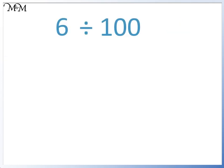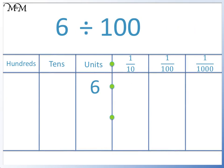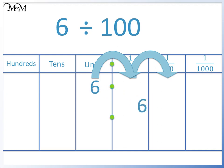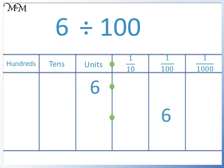6 divided by 100. We move the 6 two places to the right. Because there are no digits to the left of the decimal point, we write a 0 in the units column. We have a space in the tenths column with no digits, so we write in a 0. We have 0.06. 6 divided by 100 equals 0.06.